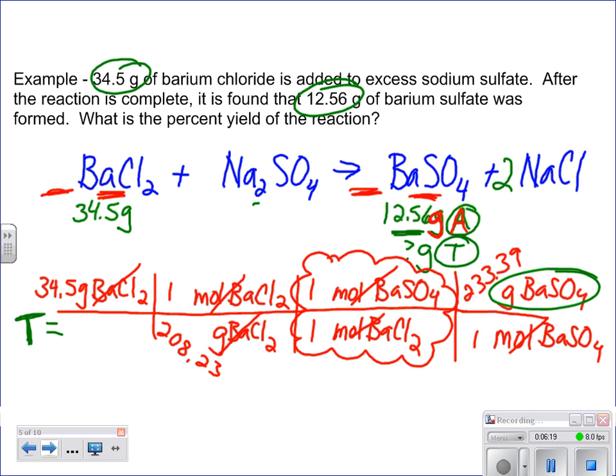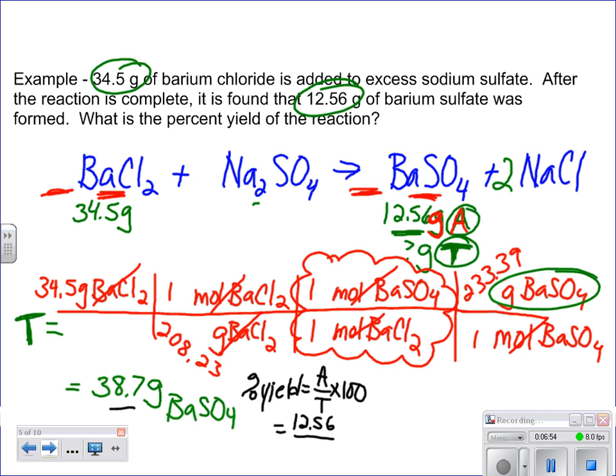Quick reminder: what we did was we calculated our theoretical yield. So in theory, that's what we should be able to produce. We plug this into our calculators and we get 38.7 grams of barium sulfate. That is our theoretical yield. We have just solved for this value. Now we know what to do. Percent yield is just actual divided by theoretical, then multiply times 100.